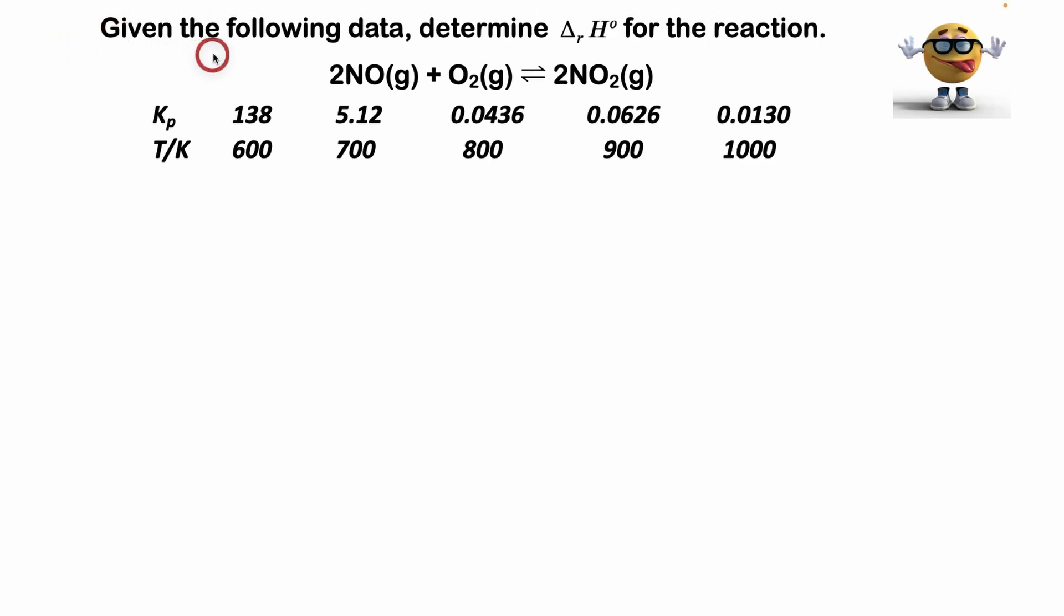Alright gang, we're going to graph the van't Hoff equation using a common exam or lab problem. Given the following data, determine the standard change in enthalpy. Enthalpy is H, and the superscript means it's under standard state, constant pressure of one bar for the reaction. We're given equilibrium constant values at various temperatures in Kelvin.